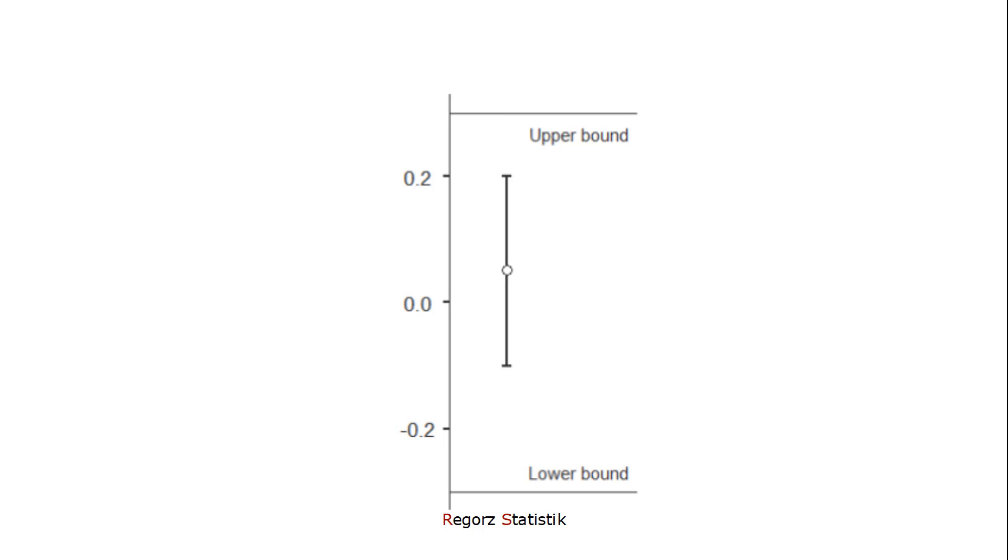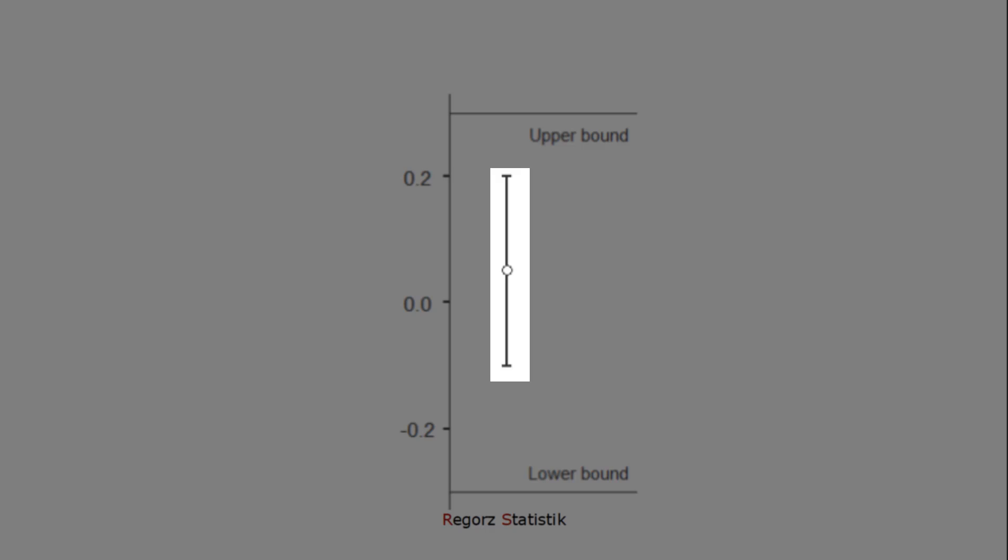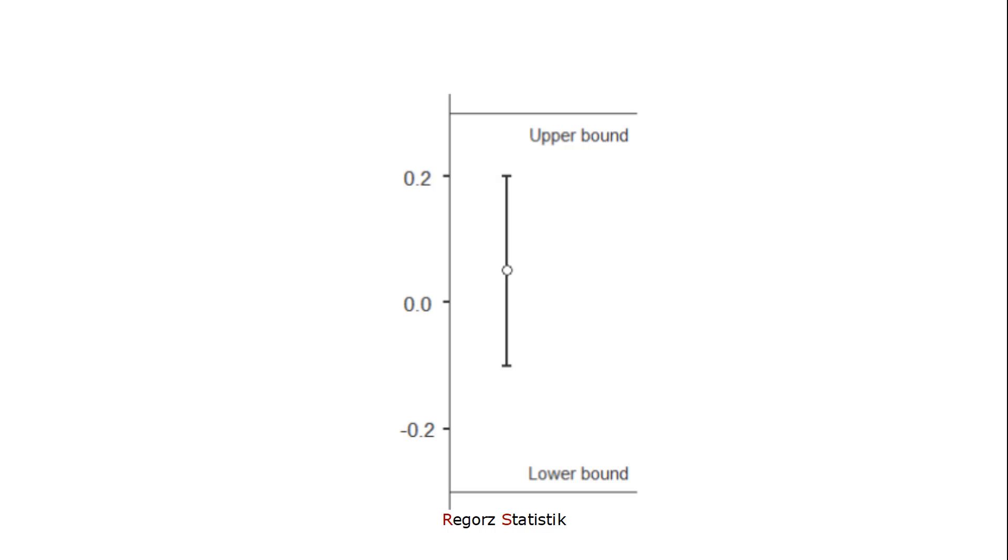In this example, we have set the lower bound at minus 0.3, and the upper bound for our correlation at 0.3. And we see that our 90% confidence interval lies completely within those boundaries. Therefore, our correlation would be equivalent to zero.